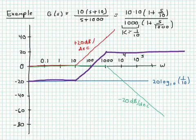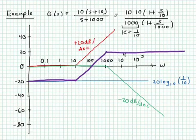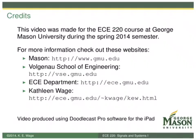So now you've seen two examples of obtaining a Bode magnitude plot from a system function. It's just a matter of adding straight-line approximations together for each component term. This concludes our video on Bode magnitude plots. I hope you've enjoyed it and found it useful. If you want more information on the ECE 220 course this video was prepared for, you can check out the course websites.